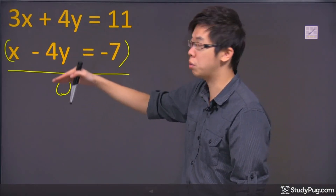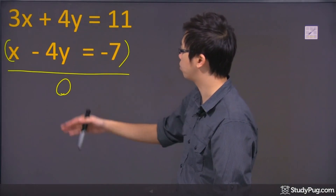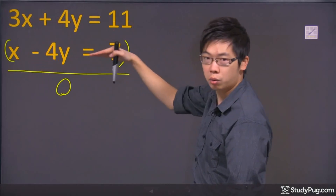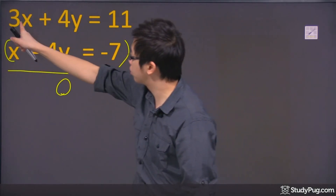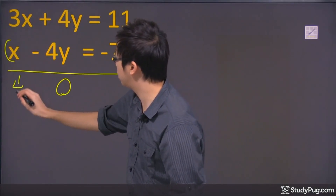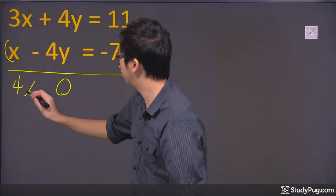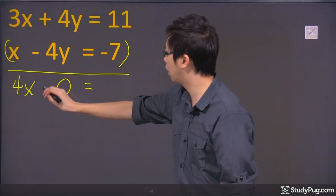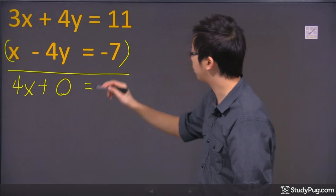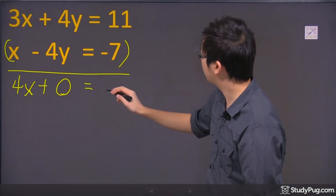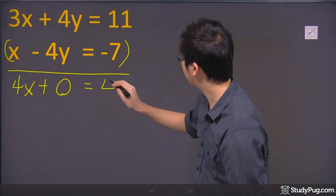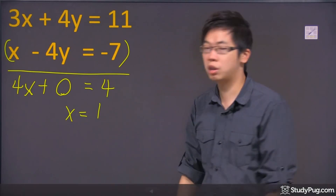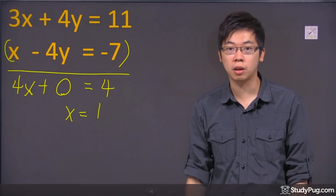I'm going to add the first equation and the second equation together. Three x plus x gives you four x. The y part is zero. This is equal to eleven minus seven, which gives us four. So to solve for x, four x equals four, which gives x equals one.